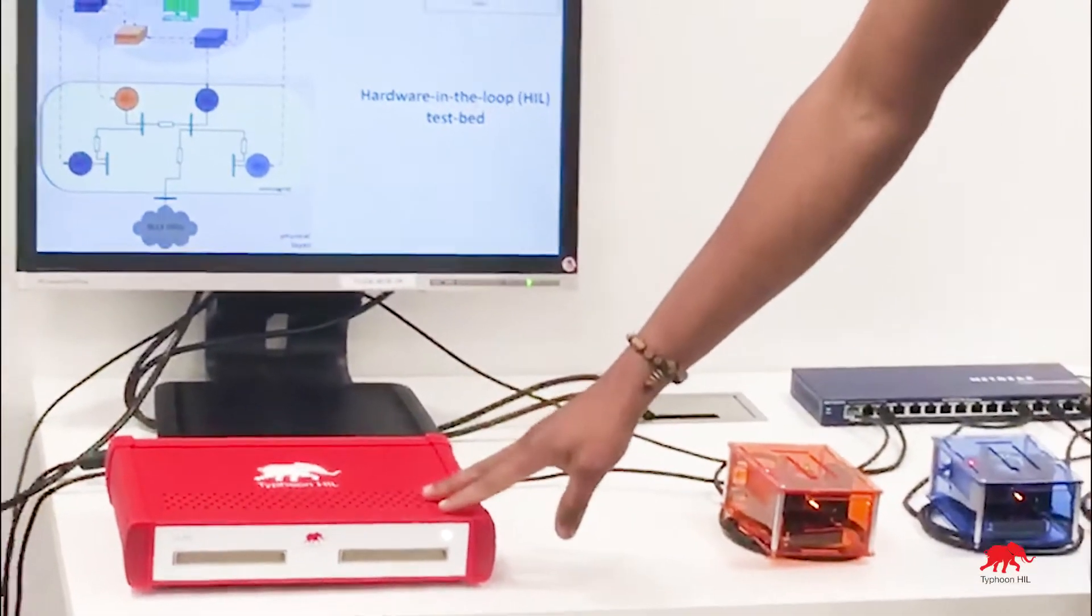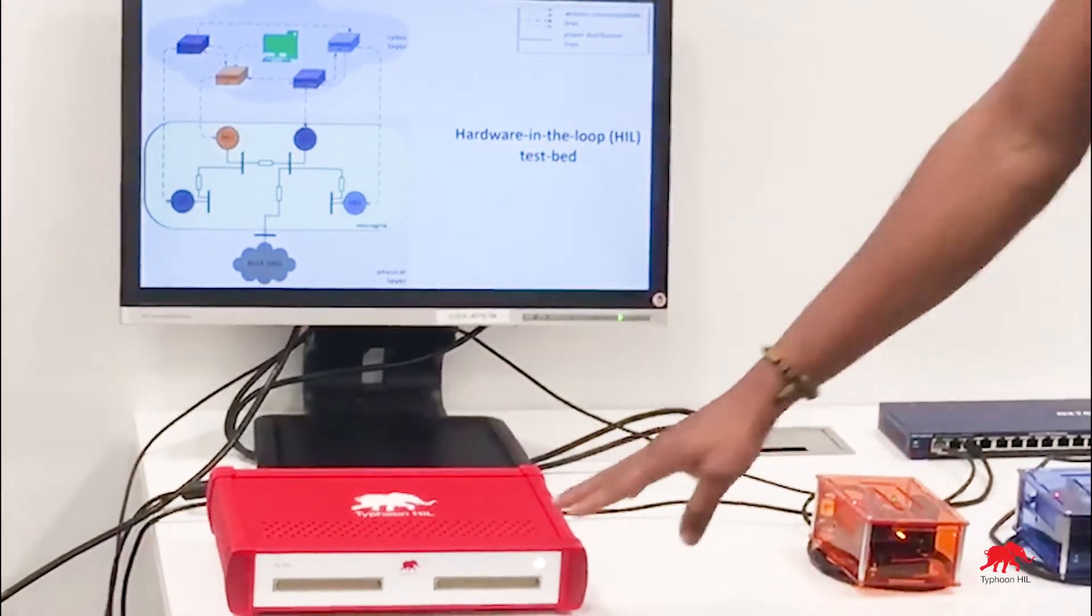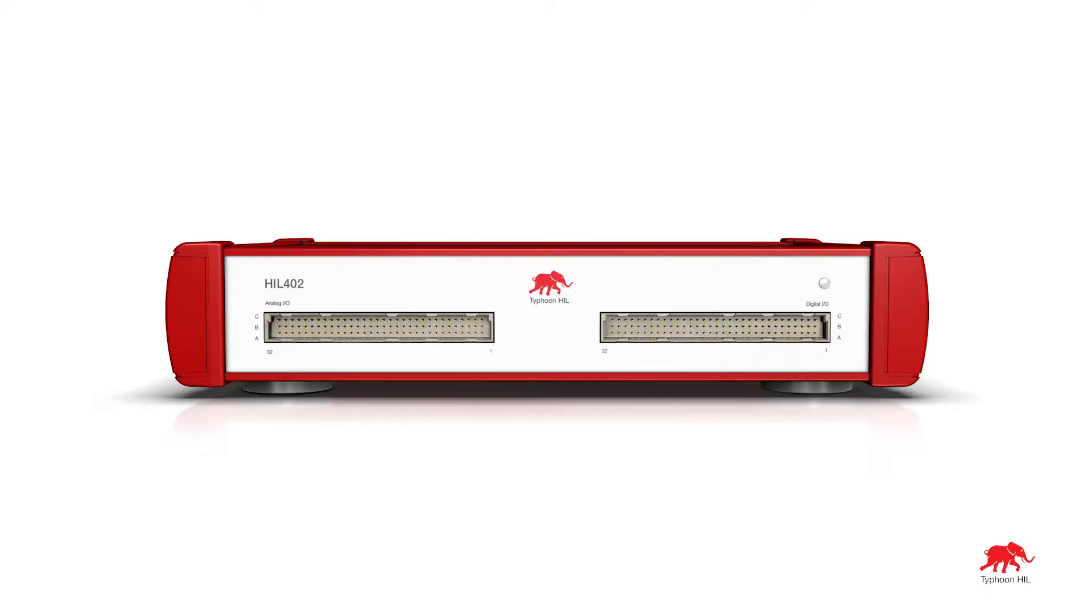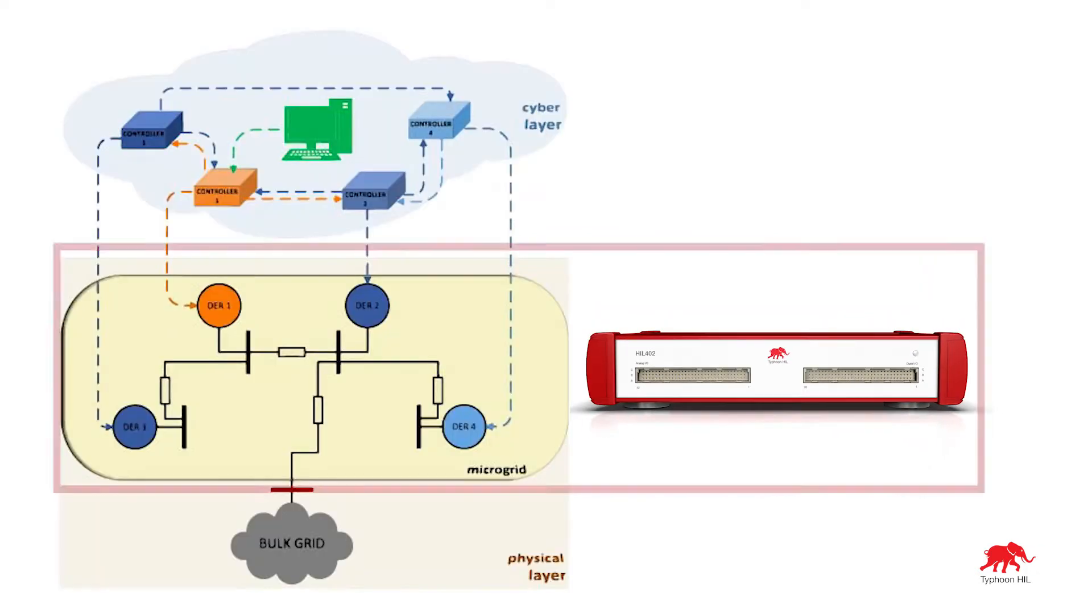This device is called the Typhoon HIL. We use this device for modeling and simulation of the physical layer. So, the microgrid and the bulk grid are modeled on this device.